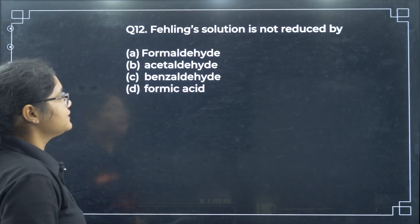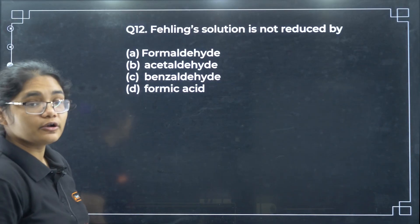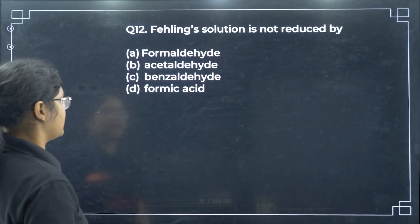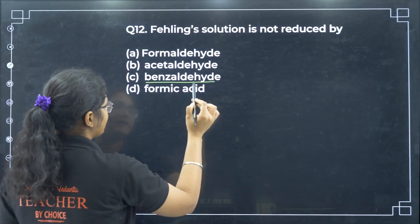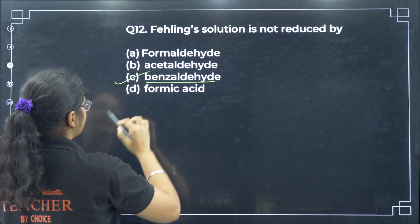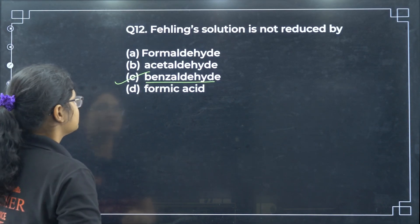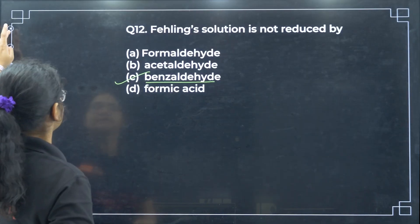Fehling solution is not reduced by aromatic aldehydes. So option C is the correct answer.